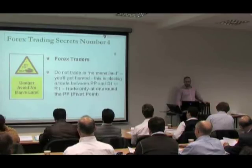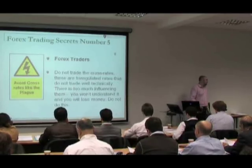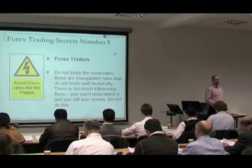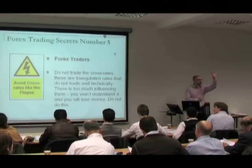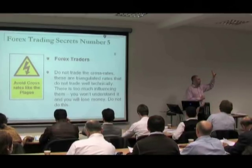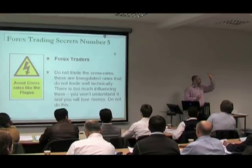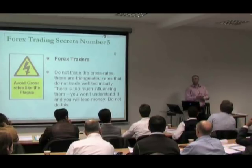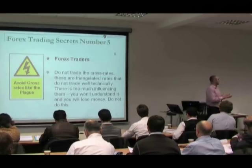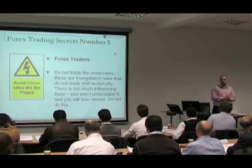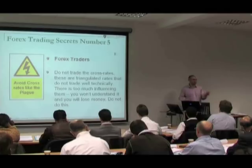Next, we're going to look at not trading cross rates or triangulated pairs. What was a good reason why we shouldn't be trading these? A cross rate or triangulated pair basically means that the U.S. dollar is not included in the currency pair, which means there's a third variable.